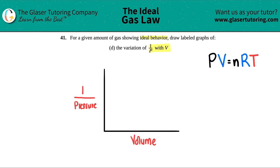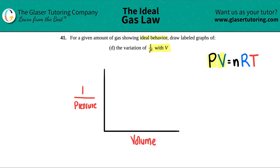Only focus on the two variables they talk about. In this case, we only care about pressure — that's the P in 1 over P — and we care about volume. The other variables are held constant, so we don't really focus on them. We just have to make relationships in terms of pressure and volume.